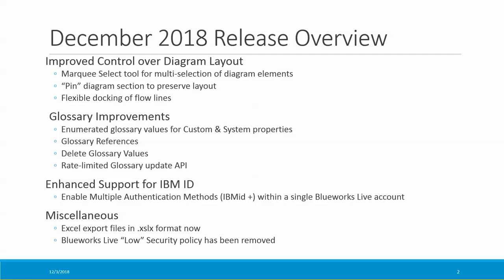The glossary has been greatly improved. Glossary values can now be deleted from the glossary. Glossary values can have associated references, which can be file attachments, hyperlinks, or other glossary values. System and custom textual glossary properties can now be restricted to a predefined set of values, and a new API is available for updating glossary values.